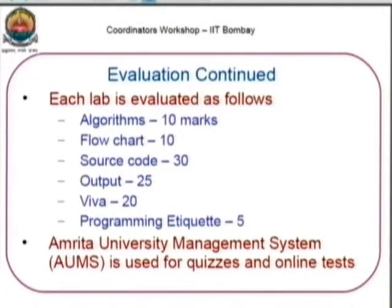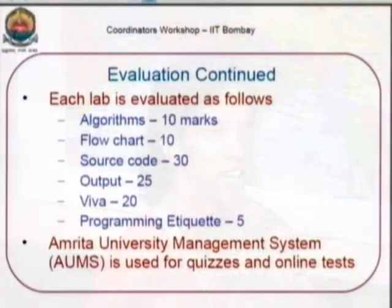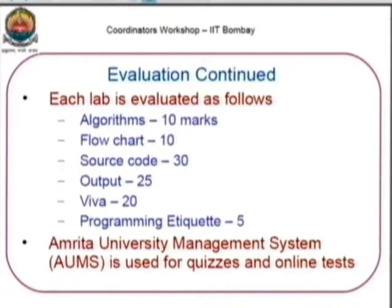For lab assignments across the 12 sessions, the evaluation breakdown is: algorithms are worth 10 marks, flowchart 10 marks, source code 30 marks, output 25 marks, and two extra lab assistants conduct a Viva worth 20 marks. Additionally, we give marks for programming adequacy — we insist on commenting and are trying to establish our own commenting standards.